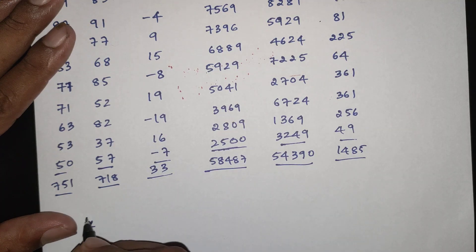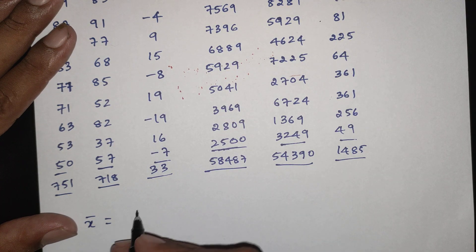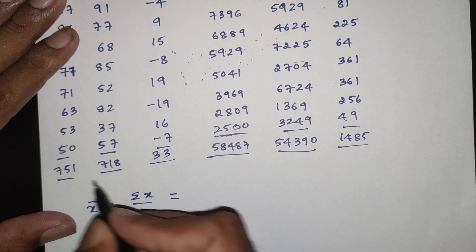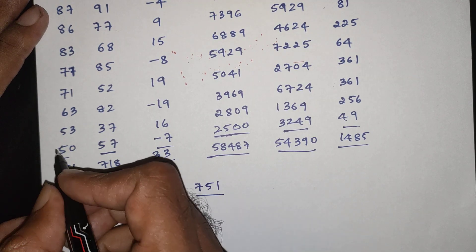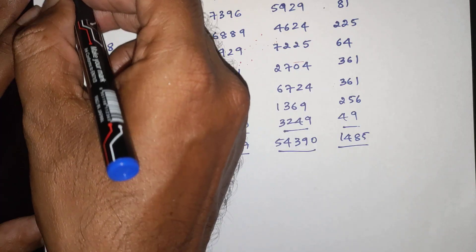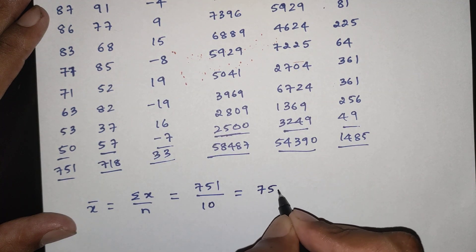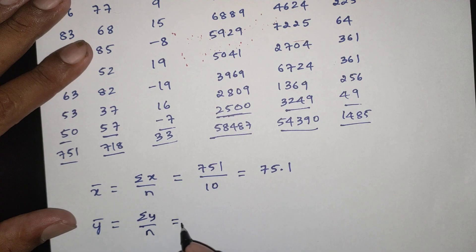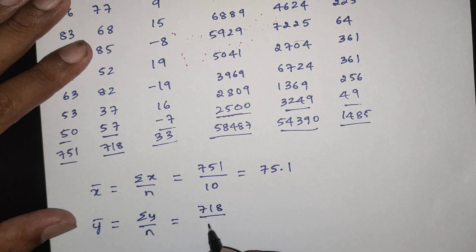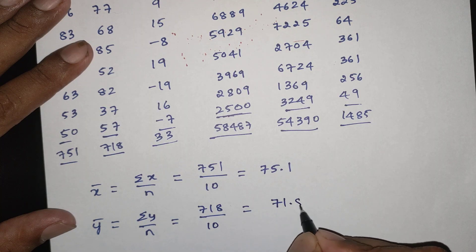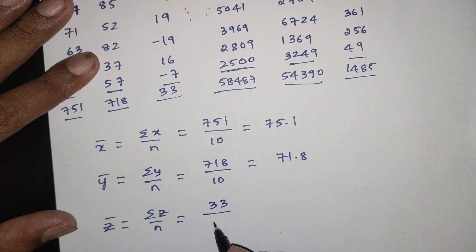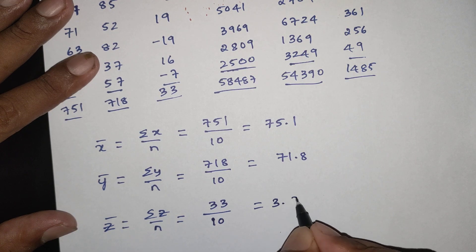First, x̄ = summation of X by n. Summation of X is 751, n is 10, so x̄ = 75.1. Then ȳ = summation of Y by n = 718 by 10 = 71.8. Then z̄ = summation of Z by n = 33 by 10 = 3.3.